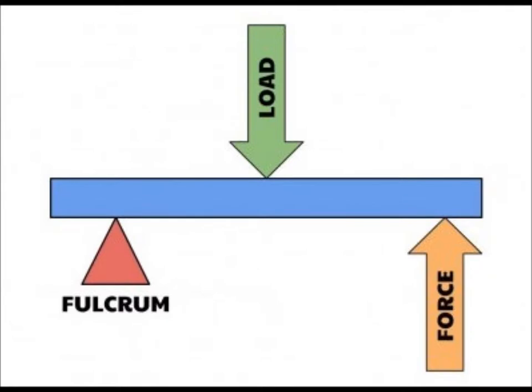Our simple machine is a lever. A lever contains three parts: a rigid bar, a fulcrum, and a thing applying resistance.